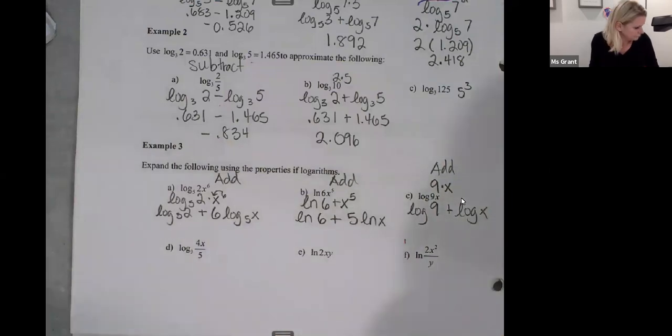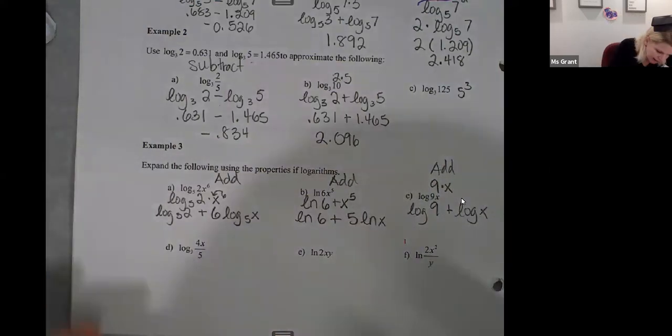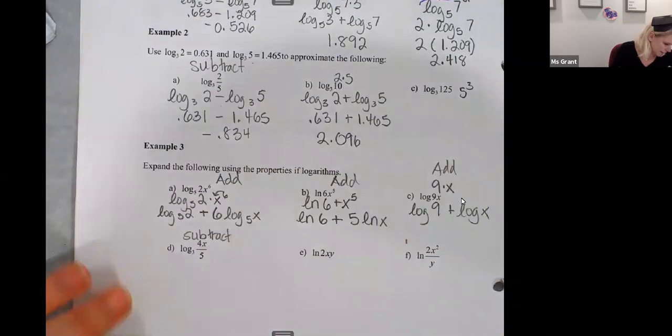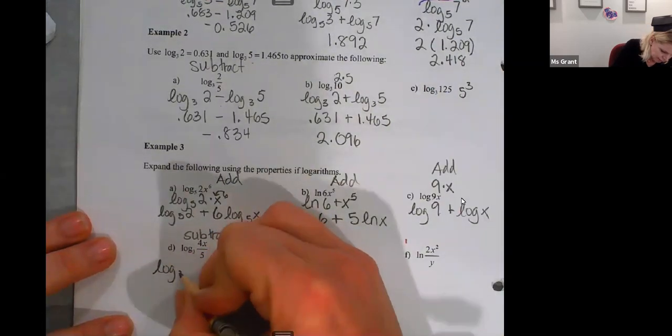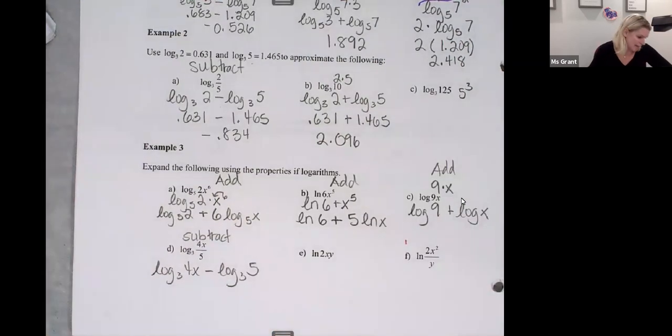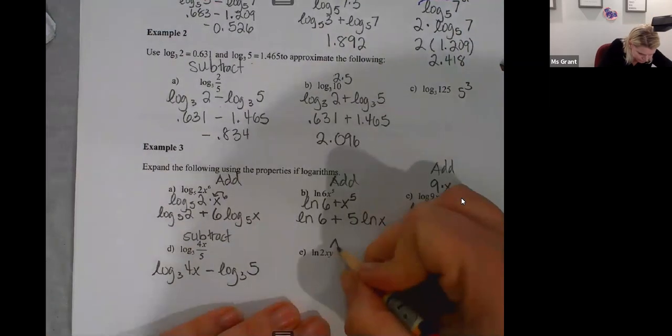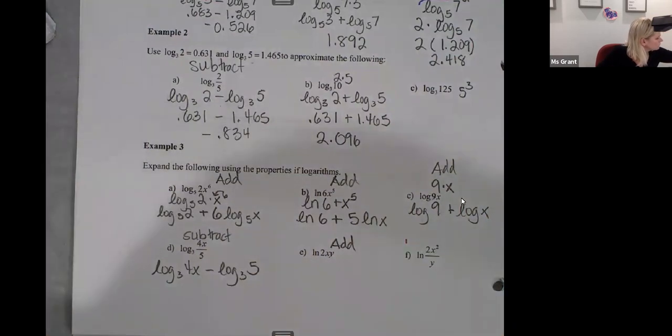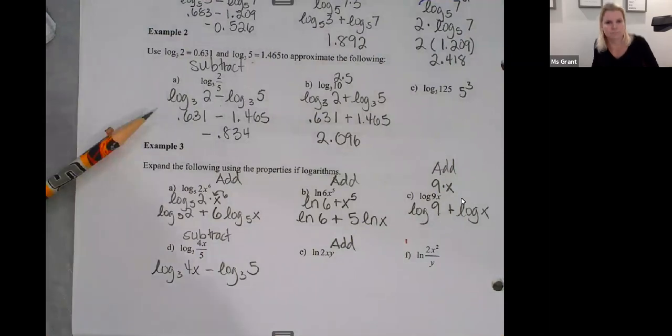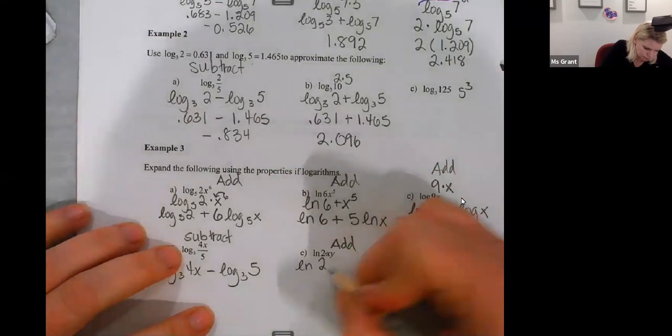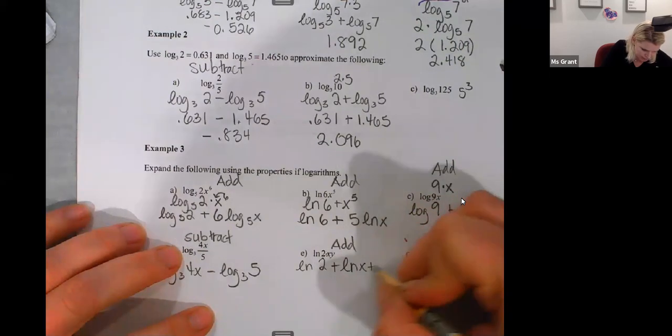D. Here's D. Subtract, you guys. It's a division. Log base three of 4x minus log base three of 5. And you leave it like that. E, two times x times y. I'm adding all this to Ln of two plus natural log of x plus natural log of y.